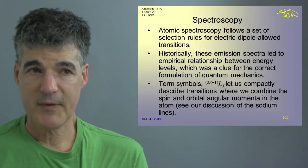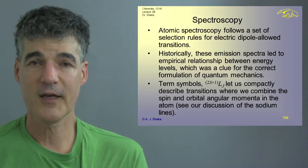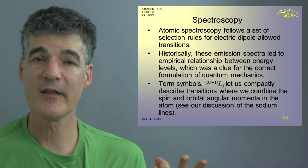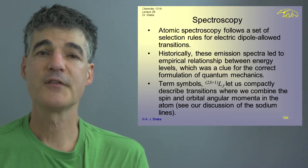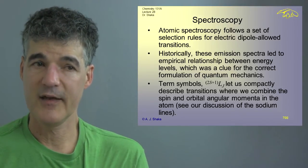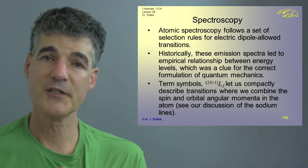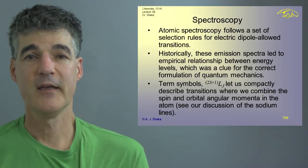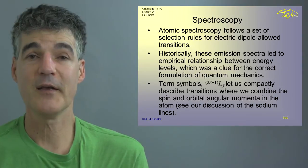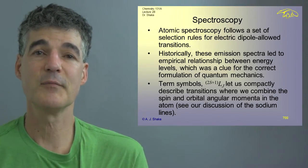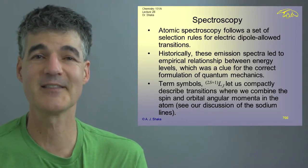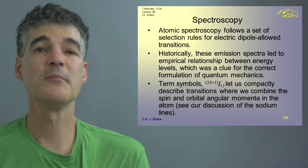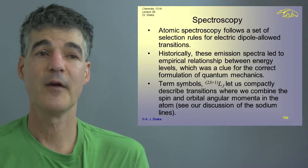We talked about atomic spectroscopy, which follows a set of rules for dipole, electric dipole allowed transitions. Delta L is plus or minus 1. Delta N is anything and so forth. Historically, it's these emission spectra that led to the empirical relationship for emission lines being differences of 1 over N squared, which Rydberg formulated, who knows how. But anyway, without knowing anything else, he just seemed to say, hey, this is a fourth minus a ninth, and this is a ninth minus a sixteenth. And it was amazing numerical insight to be able to do that. But it was still completely unexplained as to why they were those differences.